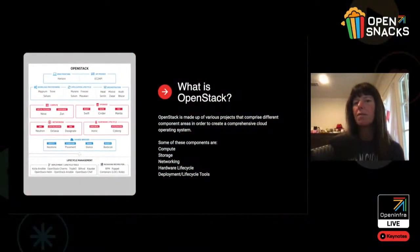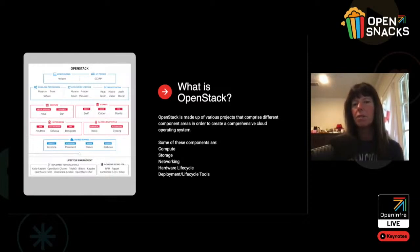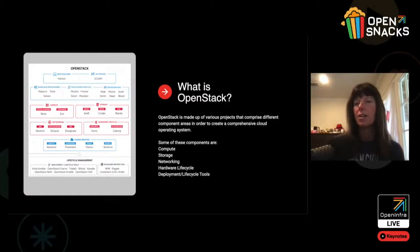OpenStack is made up of various projects that comprise different component areas in order to create a comprehensive cloud operating system. Some of these components are compute — Nova for virtual machines and Zun for containers. We've also got storage: Swift for object, Cinder for block, and Manila for shared.